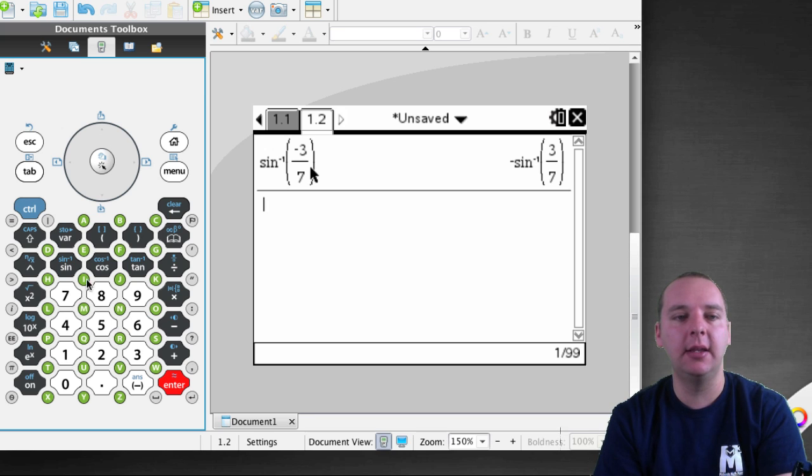I would recommend, this is a little trick to get around that. We'll say sine inverse of negative 3.0 divided by 7. Basically all you're doing here is you're tricking the calculator, you're forcing it to make a decimal answer, not a symbolic answer. By putting that .0 in there, it's the same thing, negative 3 is the same thing as negative 3.0, but you're forcing it to give you a decimal answer. Now, that's not the only way to do this. There's ways to convert your exact values to decimals. This is just a quick little shortcut.